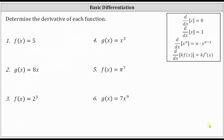We're going to find the derivative of each function. Let's begin by reviewing the derivative formulas shown on the right. First, we have the derivative of a constant with respect to x is equal to zero. Then we have the derivative of x with respect to x is equal to one. Then we have the Power Rule of Differentiation, which states the derivative of x to the power of n with respect to x is equal to n times x to the power of n minus one.